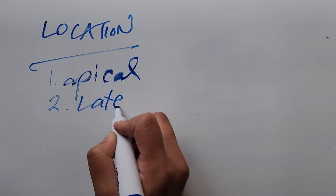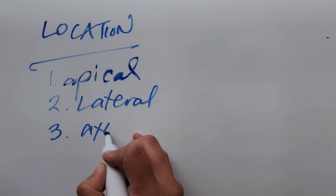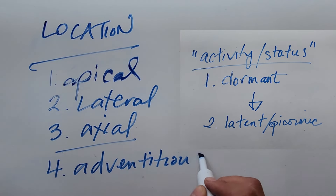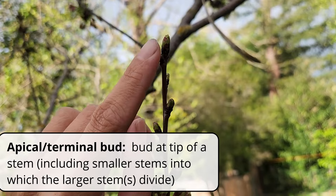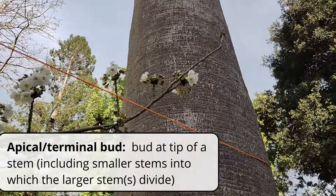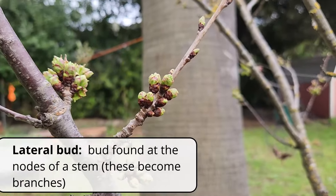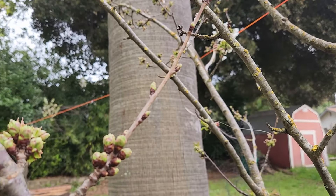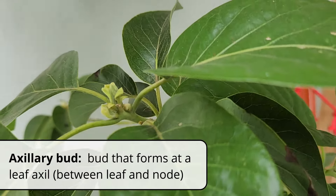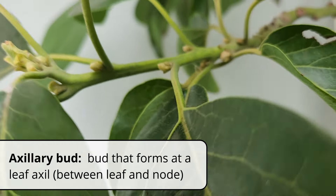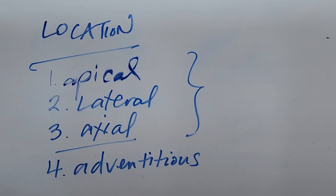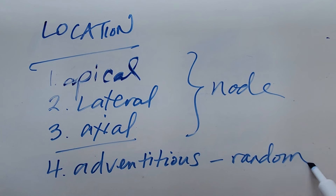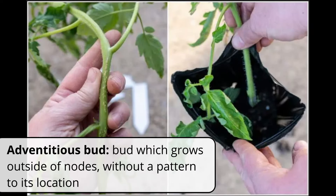Now we're moving on to different types of buds. I'm going to categorize them based on where they're located on a stem, as well as what I'll call their activity status. Based on location, we have four types. The apical or terminal bud is found at the tip of a stem, including the smaller iterations that come off of it. A lateral bud is found on the side of a stem, typically at a node, and will eventually develop into its own stem with its own apical bud. Then you have an axillary bud, which forms in the leaf axil between the leaf and the node. These three types grow neatly from nodes, but sometimes buds will grow in locations you don't expect, with no pattern to where they show up — these are the adventitious buds.